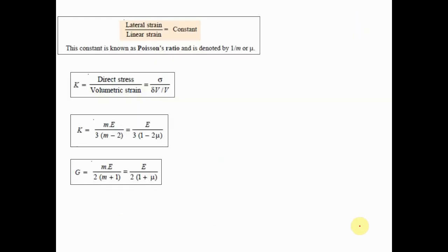Poisson's ratio is the ratio of lateral strain to linear strain. It is denoted by mu (μ), or sometimes one-by-m (1/m), though mu is used 99% of the time.